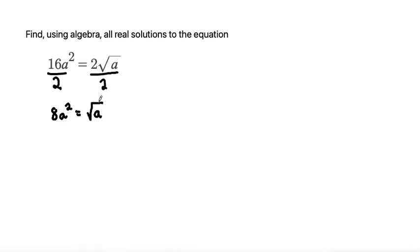Now that I've got my square root isolated, I'm going to square both sides to get rid of that square root. So 8 squared is 64 and a squared squared is a to the power of 4, and this square cancels out the square root leaving just a on the right side.